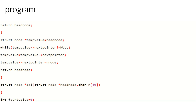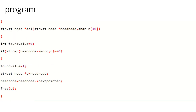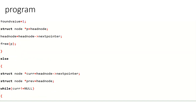Once the end is reached, temp's next pointer is set equal to new node, inserting it at the end. It then returns the head node. Next is the deletion operation. Deletion takes place from the start by finding the value. strcmp is used to return values like positive, negative, or zero. If found value equals 1, the new node is set to head node and free() is called — the node is deleted.